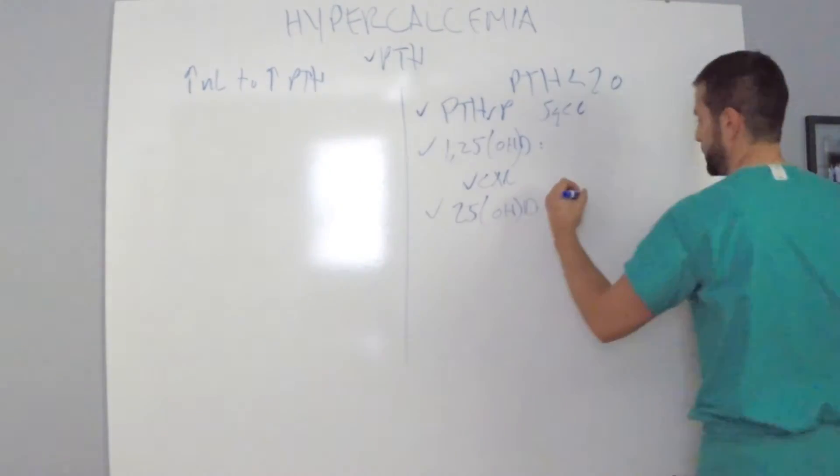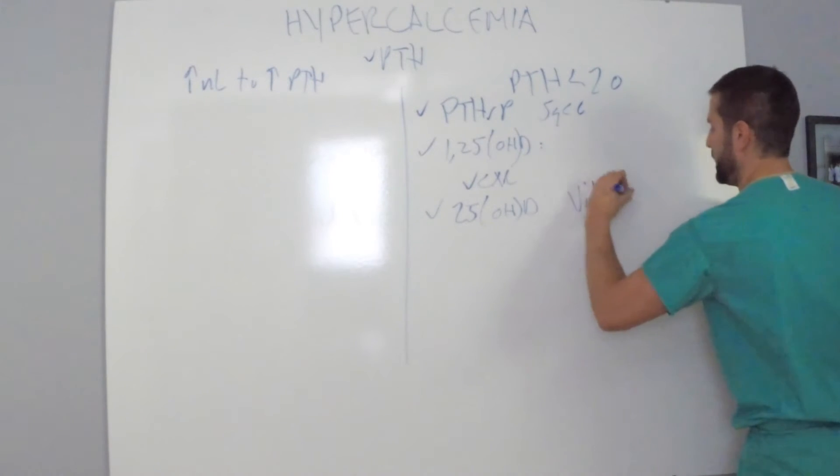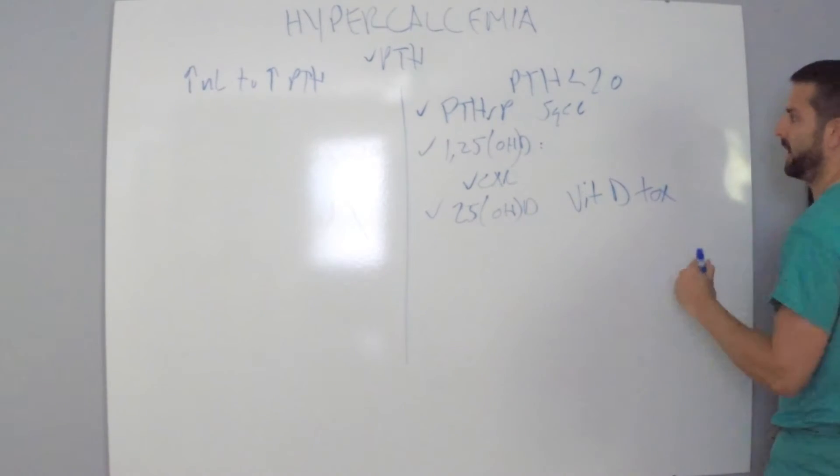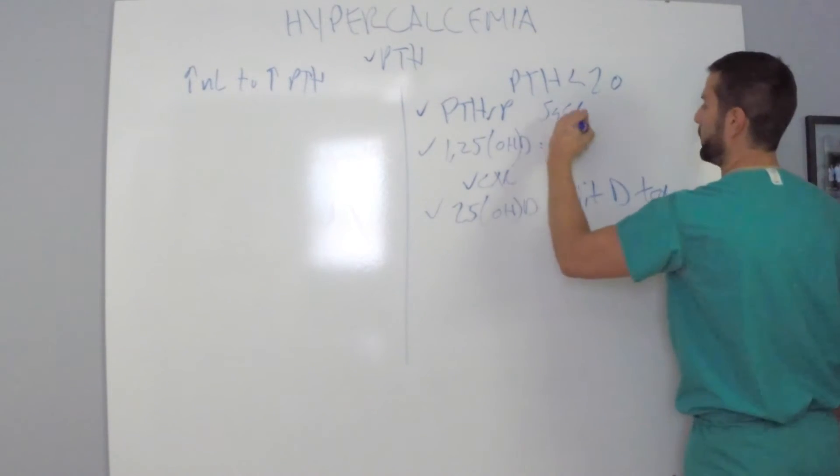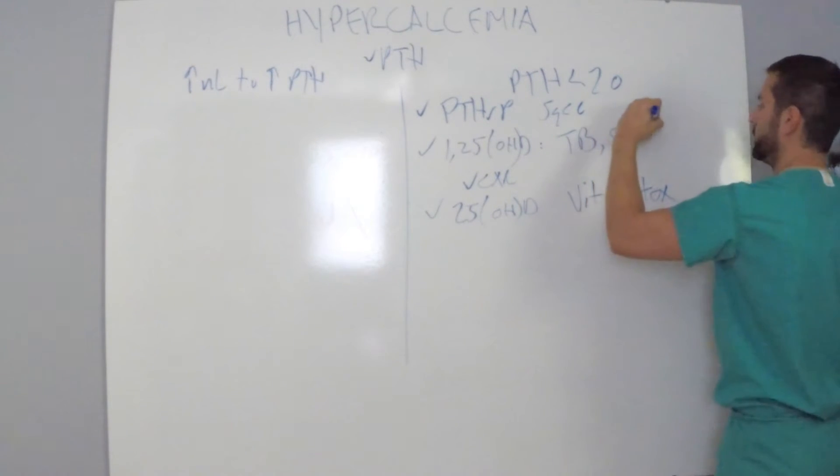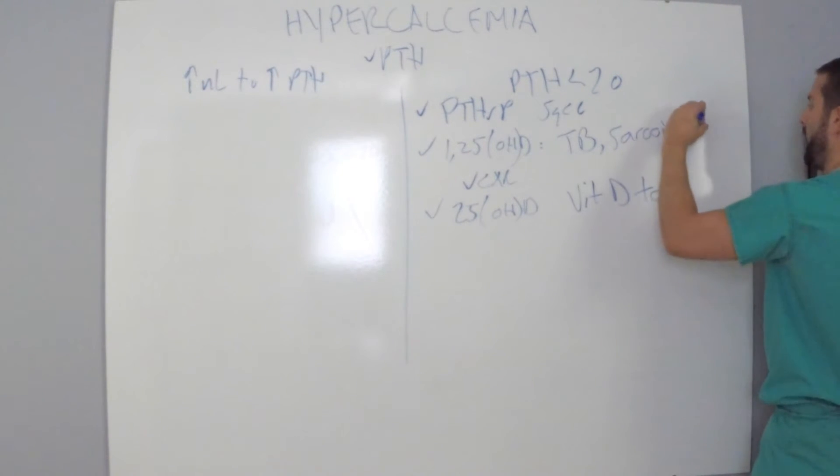So let me just go ahead and just jot this down. Vitamin D toxicity, pardon my poor handwriting, and then this is the patients who have TB, who have sarcoid, sarcoid, and who have B-cell lymphoma.